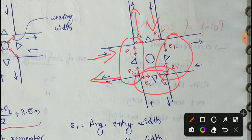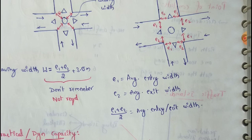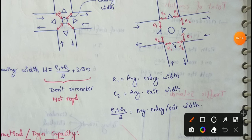Average entry width and average exit width. So E equal to E1 plus E2 by 2.